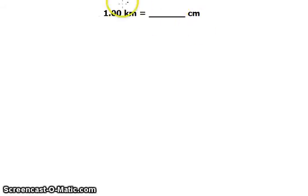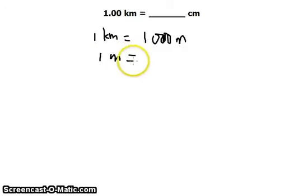We're going to convert kilometers to centimeters, and we'll just need very few conversion factors. We know that 1 kilometer is equivalent to 1,000 meters. Kilo means 1,000. And 1 meter is equivalent to 100 centimeters, centimeters to the hundred.